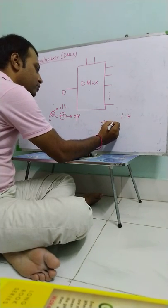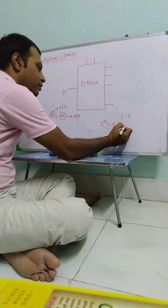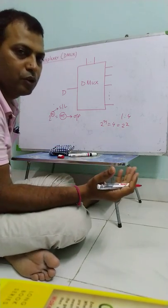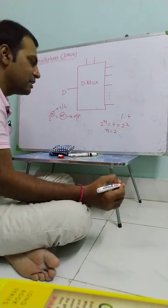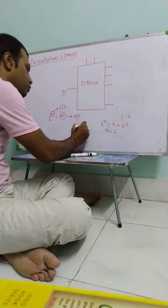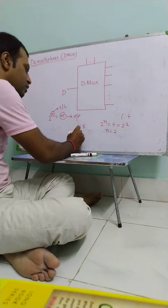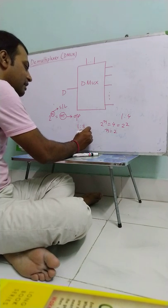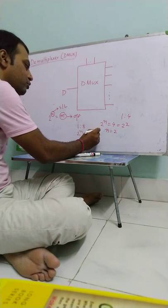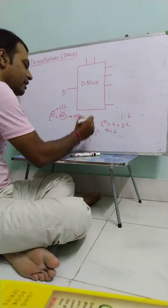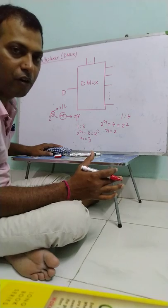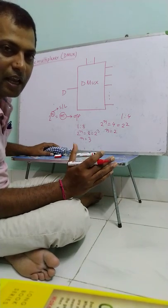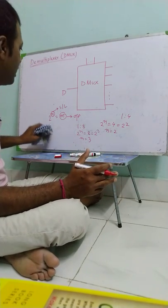So for 1 to 4 demux, 2 to the power n is equal to 4, that is 2 to the power 2. So 2 number of select lines are required. Similarly, for 1 to 8 demux, 2 to the power n is equal to 8 is equal to 2 cube. So n is equal to 3. So 3 number of select lines are required for 1 to 8 demux.